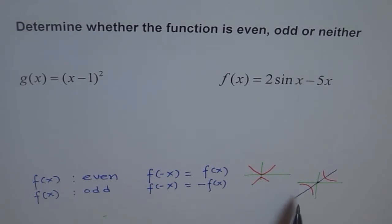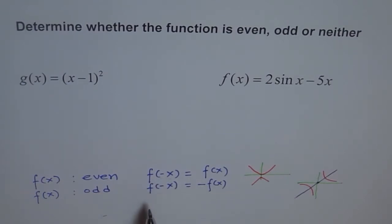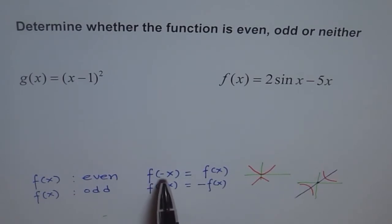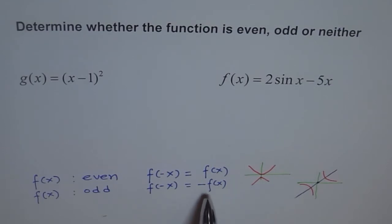If neither of these is true, then the function is neither odd nor even. The strategy to figure out whether a function is even or odd is to find out what f of minus x is. If f of minus x is the same as f(x), then it is even. But if it is the negative of that, then it is odd. That is how we figure out whether it is even or odd.